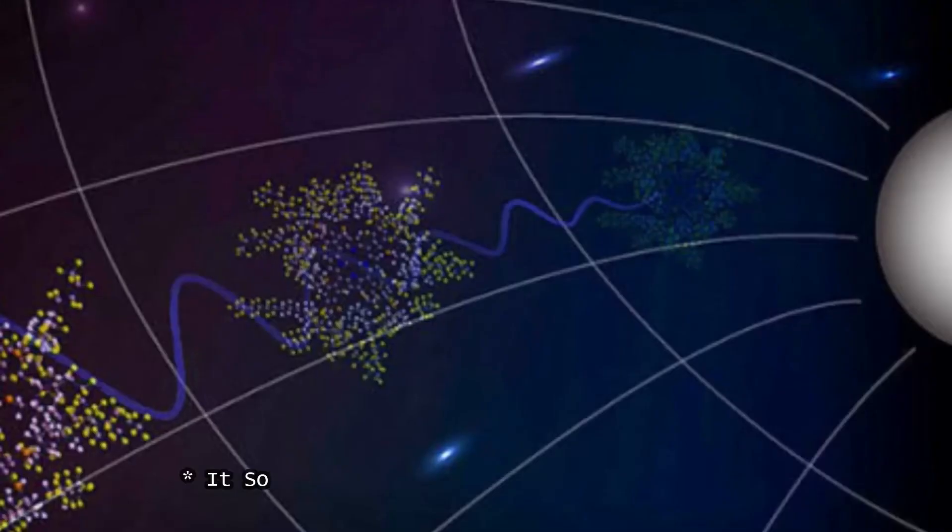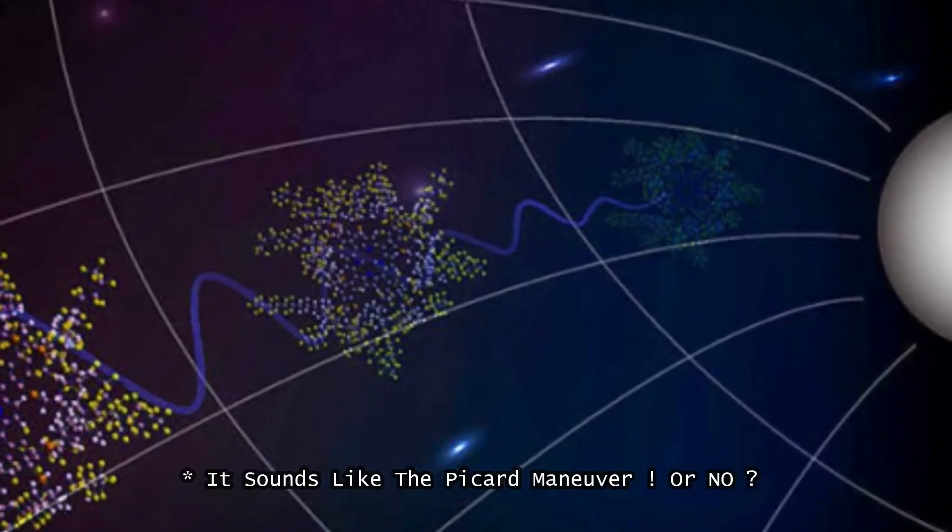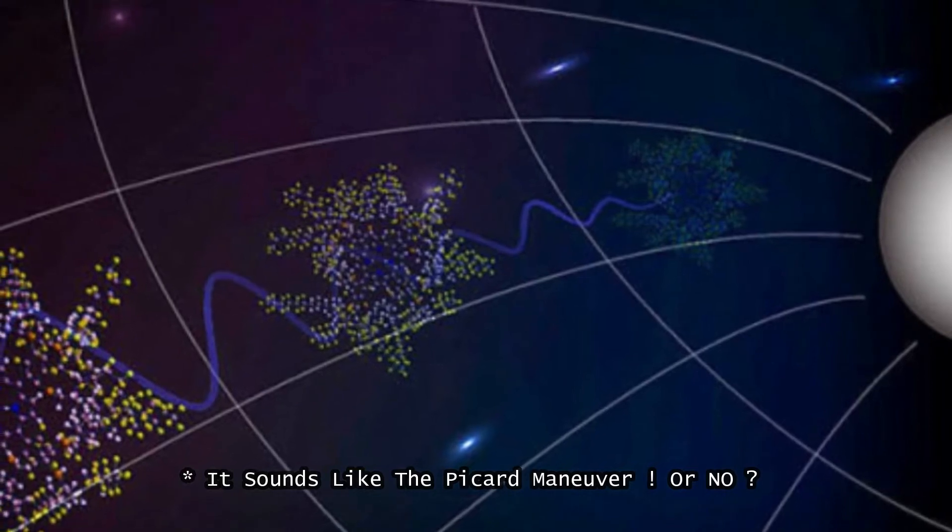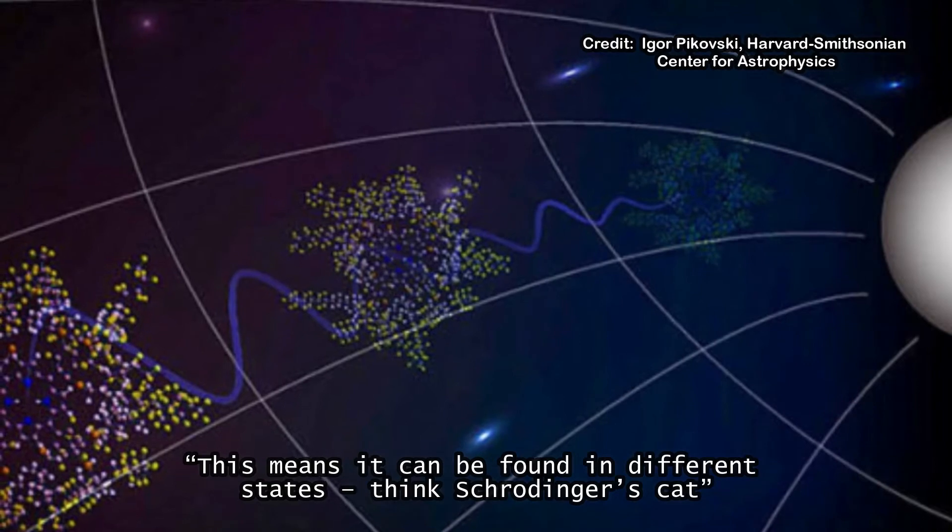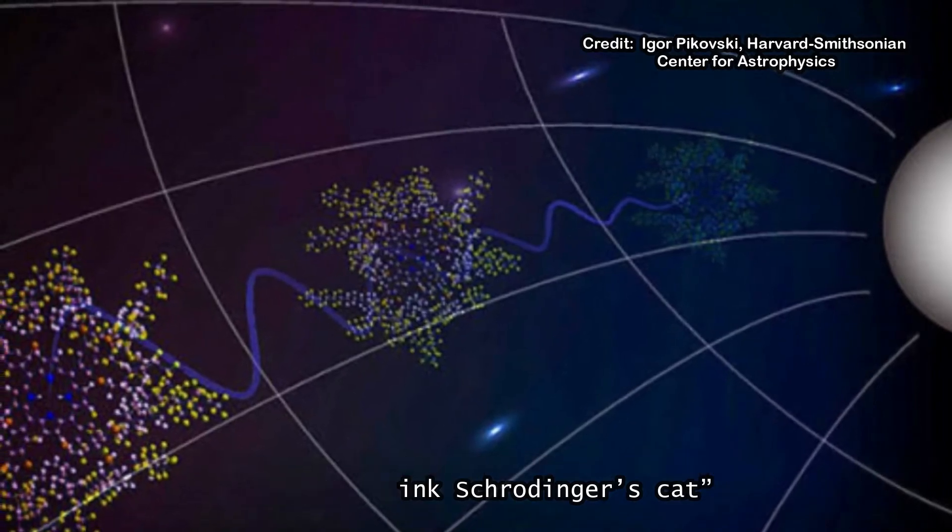Dr. Zeich said the second theory, of quantum mechanics, says any object can be in a state of superposition. This means it can be found in different states, think Schrodinger's cat, she said.